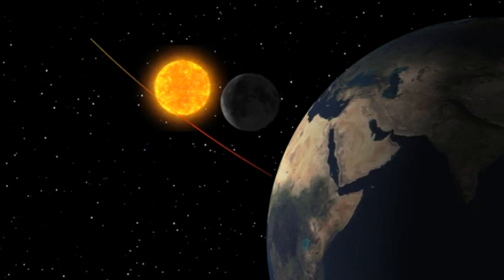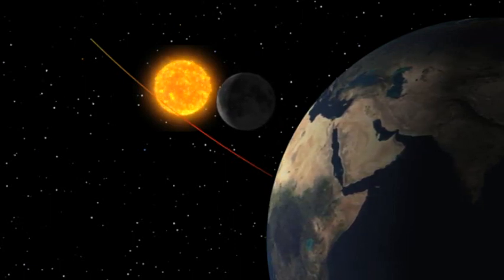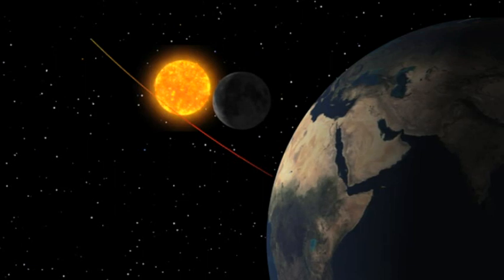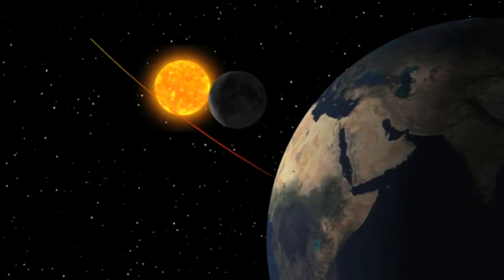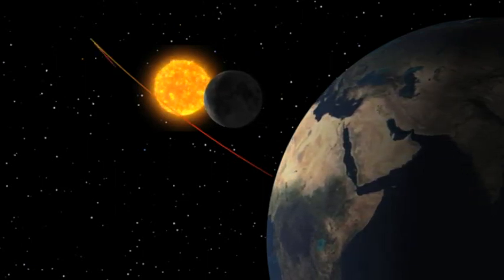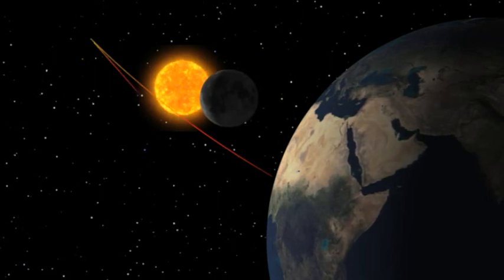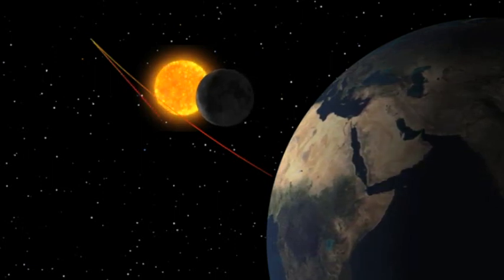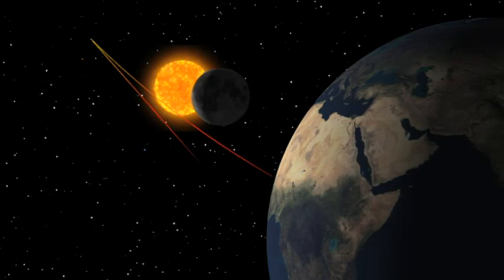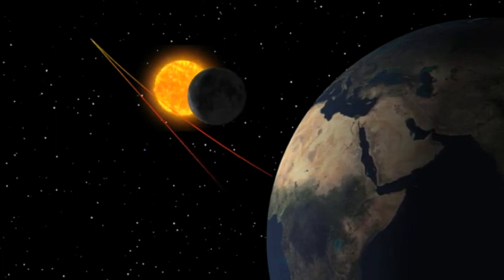It would be hard to tell. The deflection of light predicted by Einstein's equation was tiny. And besides, you can't see the light from stars that lie behind the Sun because the Sun is too bright. You need to be able to see the stars in the daytime.